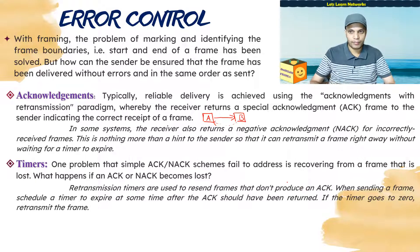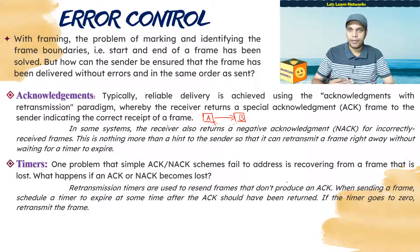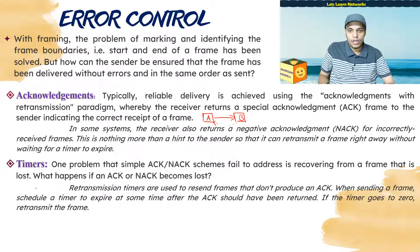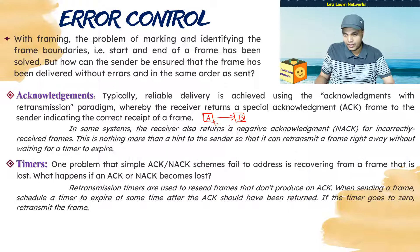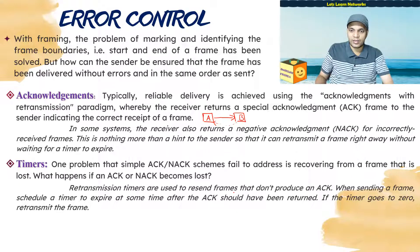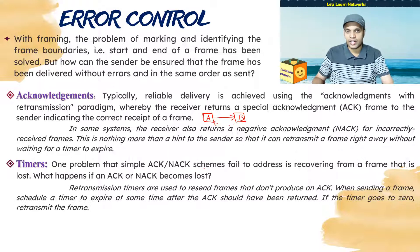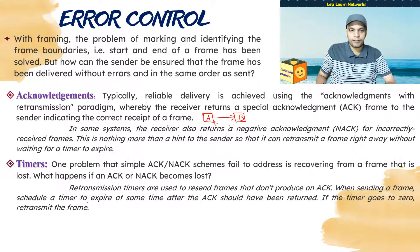Retransmission timers are used to resend frames that don't produce an acknowledgement. For example, if it normally takes two seconds for an acknowledgement to arrive, you might wait three seconds. If no acknowledgement is received within those three seconds, you assume the frame or acknowledgement is lost and retransmit. When sending a frame, you schedule a timer to expire some time after the acknowledgement should have arrived. If the timer reaches zero, simply retransmit the frame.